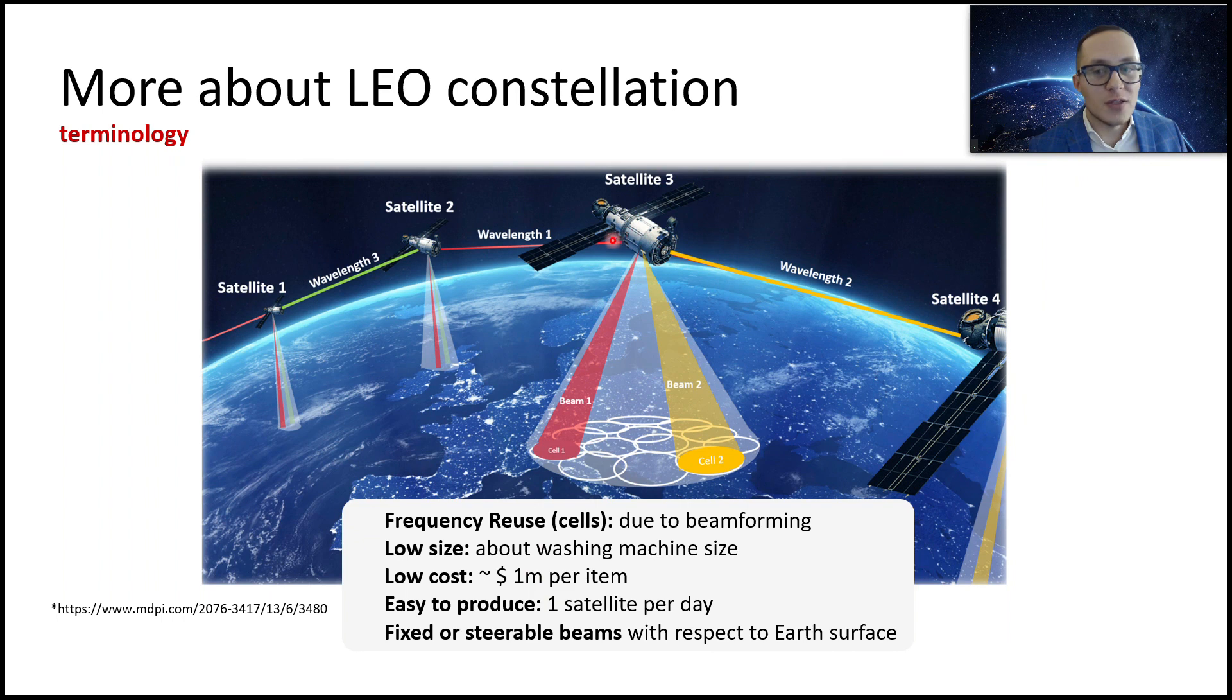Just one million dollar for one satellite. This is not a big deal for mega companies. Easy to produce. For example, if we again talk about OneWeb, their project, they claimed that they can produce one satellite per day. And they could have different, for example, fixed or steerable beams related to Earth's surface. And again, it's important to highlight that one of the issues that LEO satellites moves very quickly, relatively to the ground.